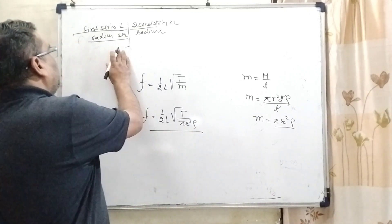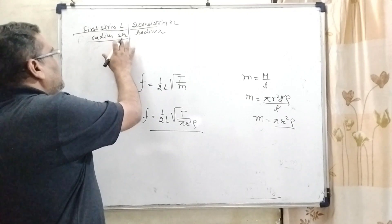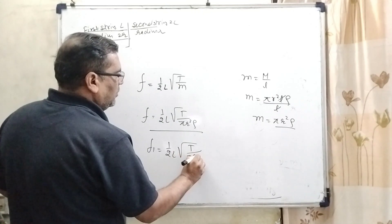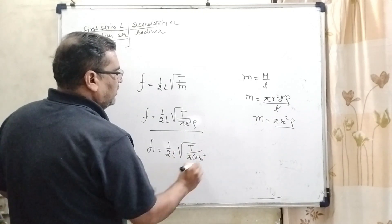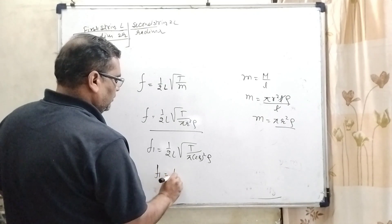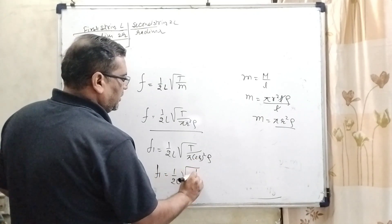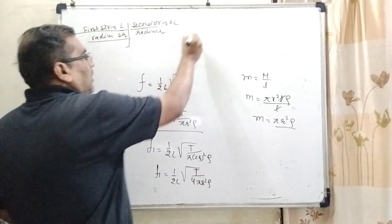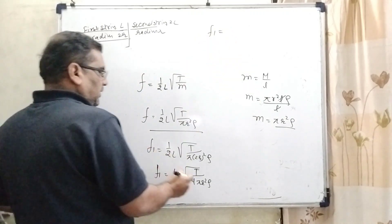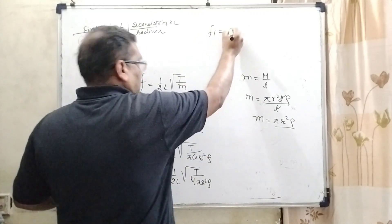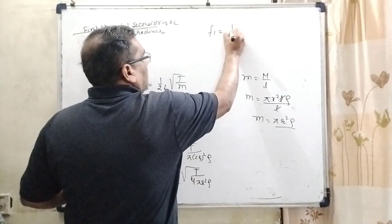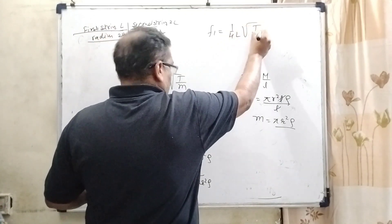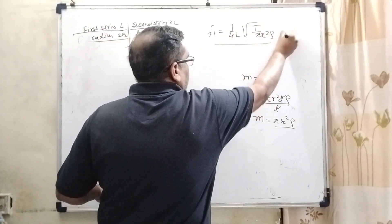Now for the first string, first string length is L and radius is 2R. So f1, 1 upon 2L root T by pi 2R square rho. Then f1 equal to 1 upon 2L, here root T by 4 pi R square rho. That is the first condition.